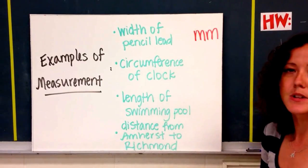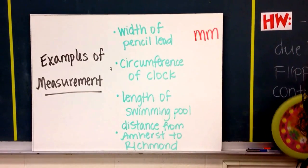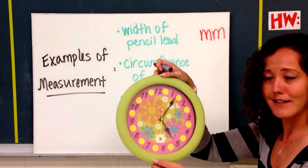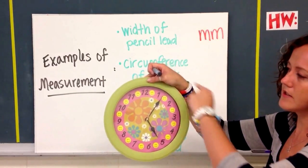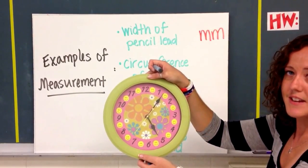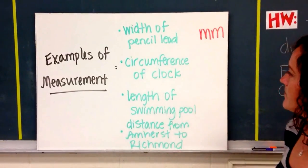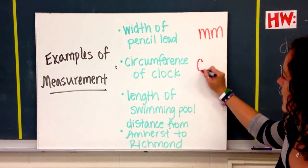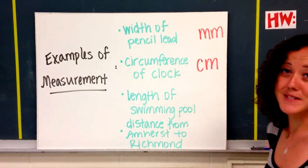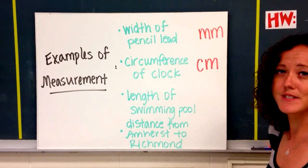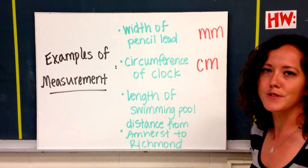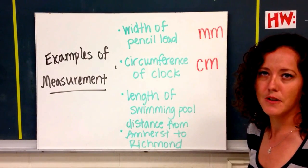Our next one is the circumference of a clock. So for instance, here's our class clock. And circumference is the distance around the edge of the clock. So instead of using millimeters, there's probably a better idea. Hopefully you guessed right. It should be centimeters. Centimeters are closer to the size of an inch. They're a little bit smaller.